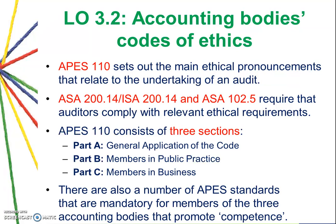In Australia there are three different accounting bodies, and each sets up their own code of ethics. APES 110 sets out the main ethical pronouncements relating to undertaking an audit. APES 110 consists of three sections: Part A covers general application of the code; Part B is for members in public practice, i.e., external auditors working for accounting firms with multiple clients; and Part C is for members in business, such as corporate accountants working for one company.